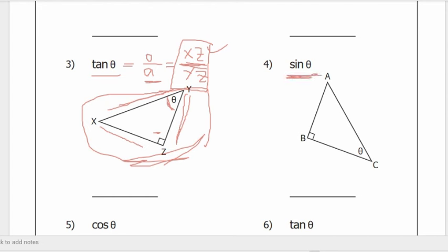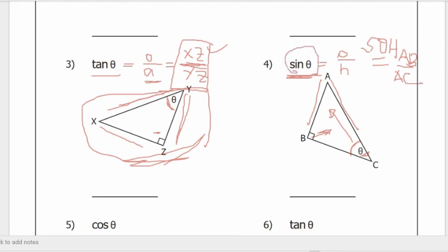Number four: sine theta. Using SOH, sine is opposite over hypotenuse. The opposite of angle theta is side AB, so the answer is AB. Over the hypotenuse — the hypotenuse is opposite the right angle — that is AC. So sine theta based on the given right triangle equals AB over AC.